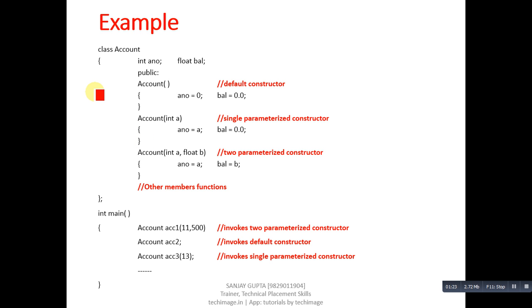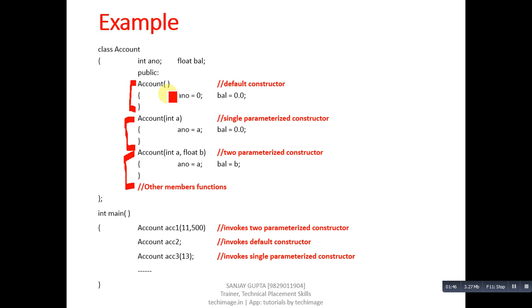You can understand this concept with the help of this example. An account class is defined and inside this class I have implemented three constructors — all three have the name 'account'. In the first definition, no argument is passed, so this is the default constructor, and 0 and 0.0 are initialized in account number and balance respectively. In the second constructor, a single argument 'a' is received, which is initialized into account number, and balance is initialized with 0.0 — this is a single parameterized constructor.